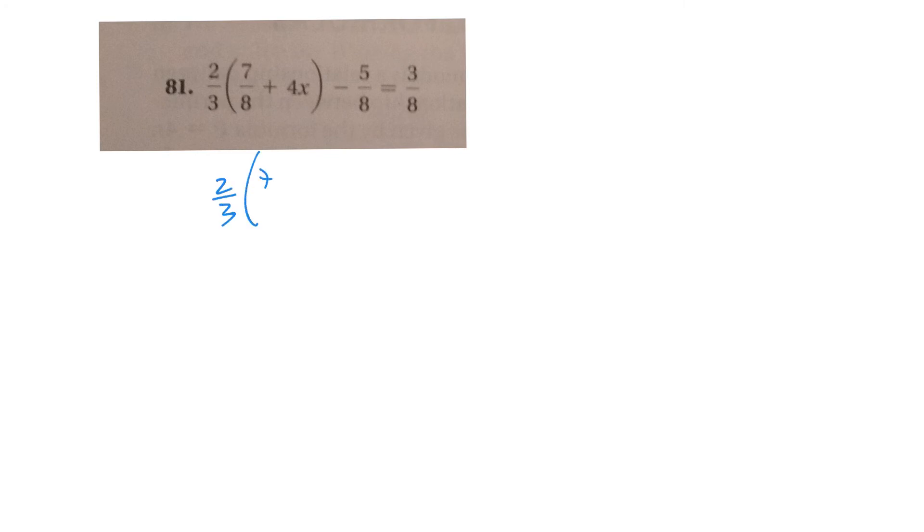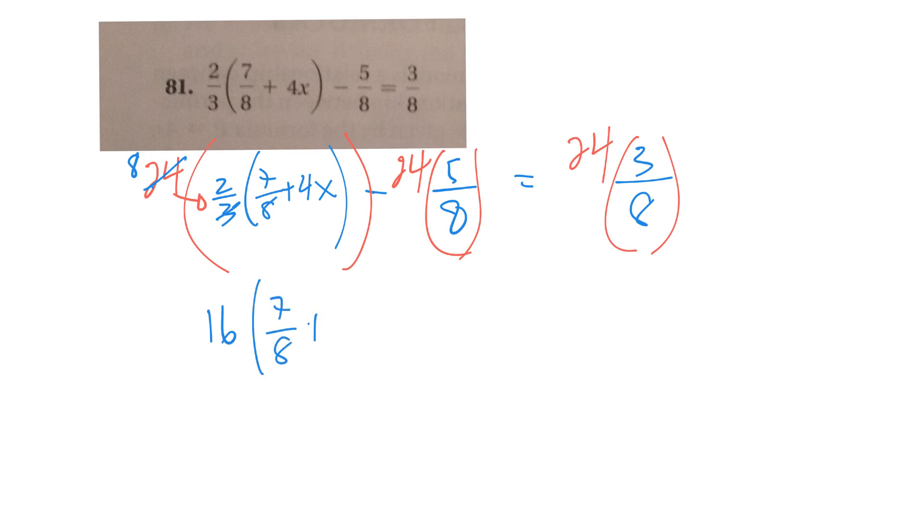So I'm going to take 2 thirds times 7 eighths plus 4x. I'm going to times that by 24. Minus, I'm going to take this 5 eighths and times it by 24. And the 3 eighths. So this whole thing gets multiplied by 24. And really, I'm just multiplying it by that fraction. This thing gets by 24. This thing gets by 24. So the 24 and the 3 cancel. So it leaves an 8 there. So it would be 8 times 2. So that's 16 times 7 eighths plus 4x minus the 8 and the 24 cancel to leave 3. 3 times 5 is 15. 8 goes into 24, 3 times 3 times 3 is 9. Hopefully that step is a little bit hard, especially when you have one term here that is a product. But you're only going to multiply it by this one here.